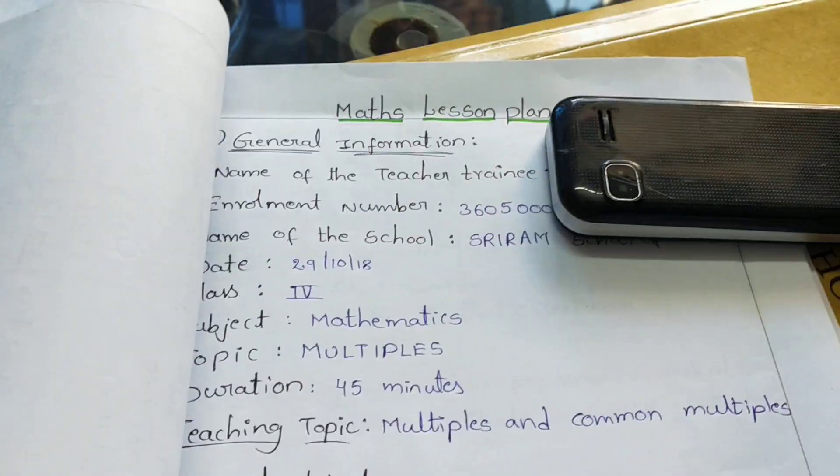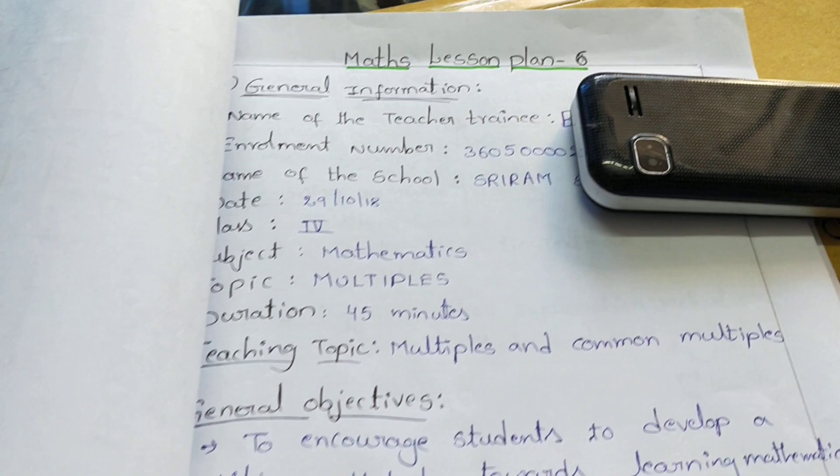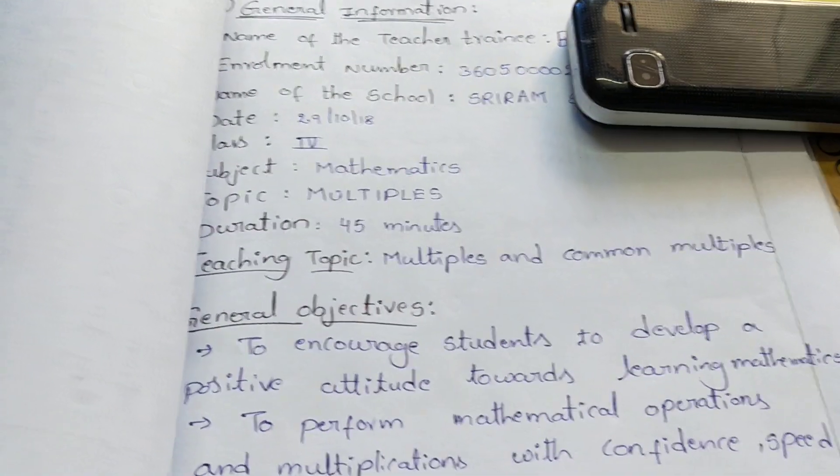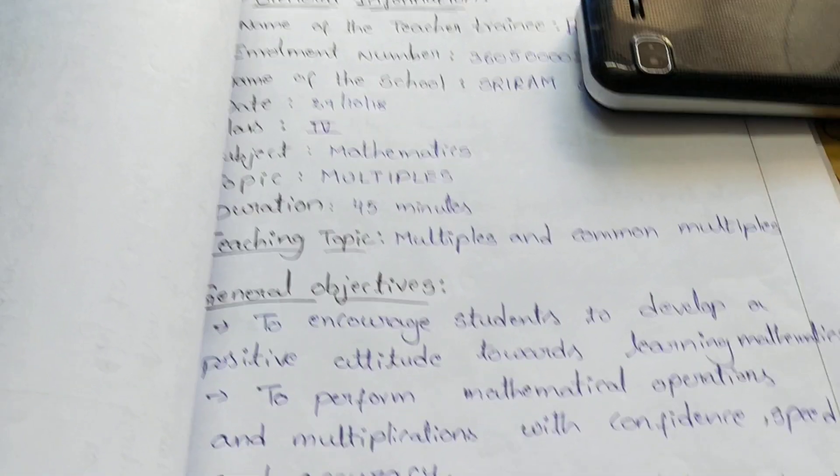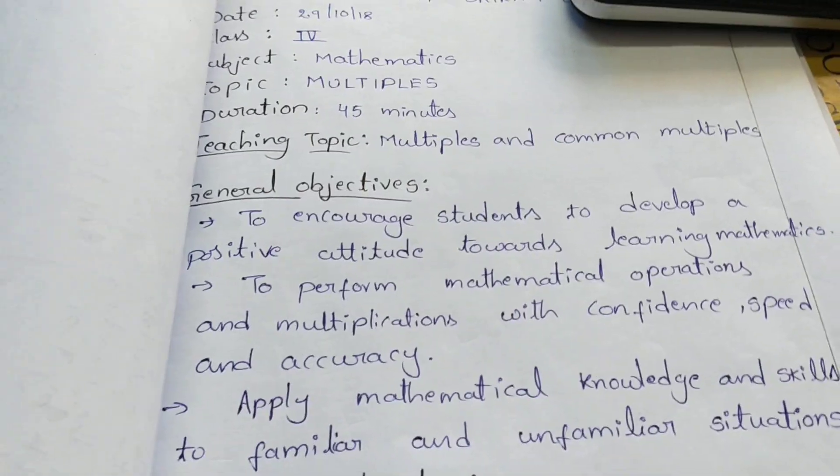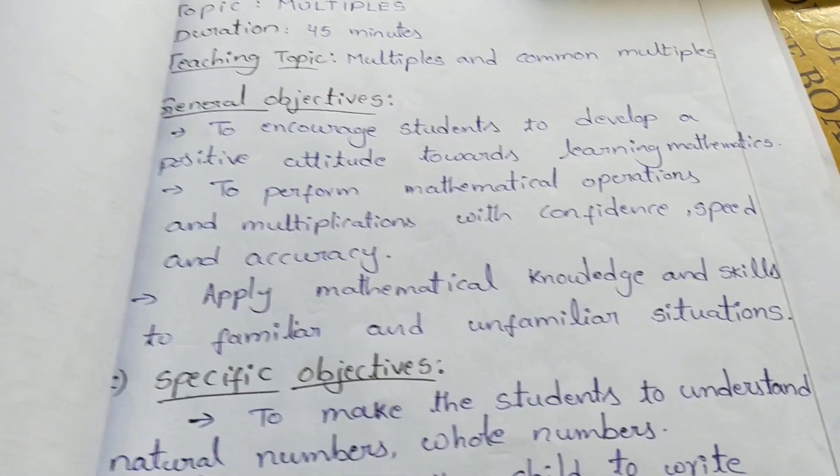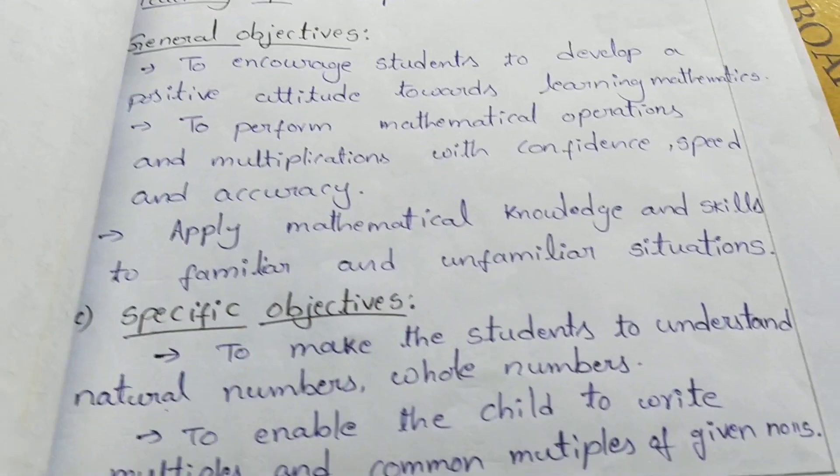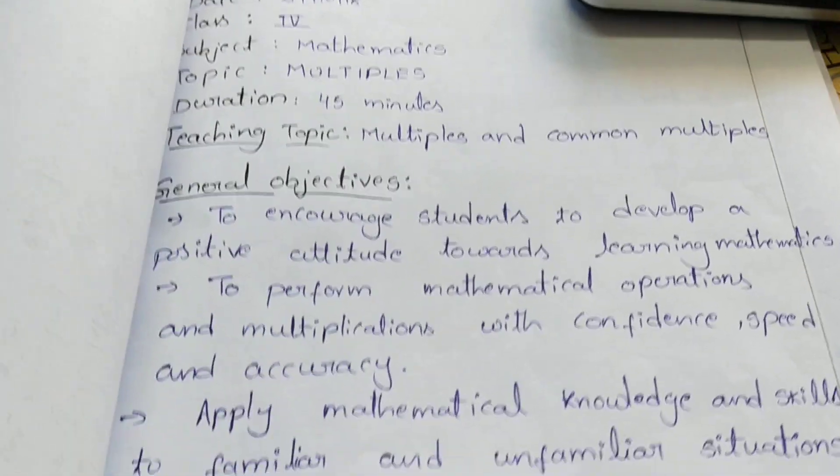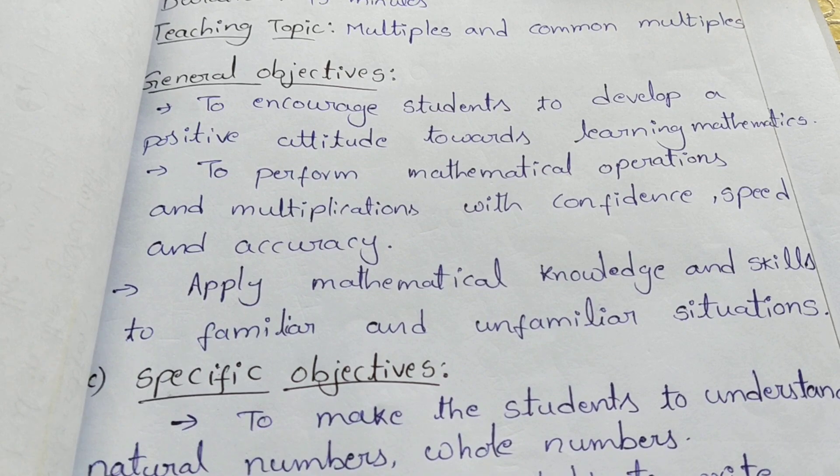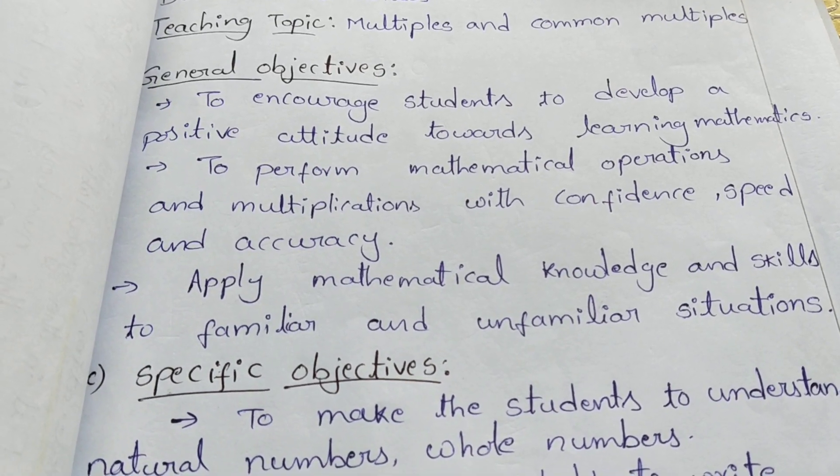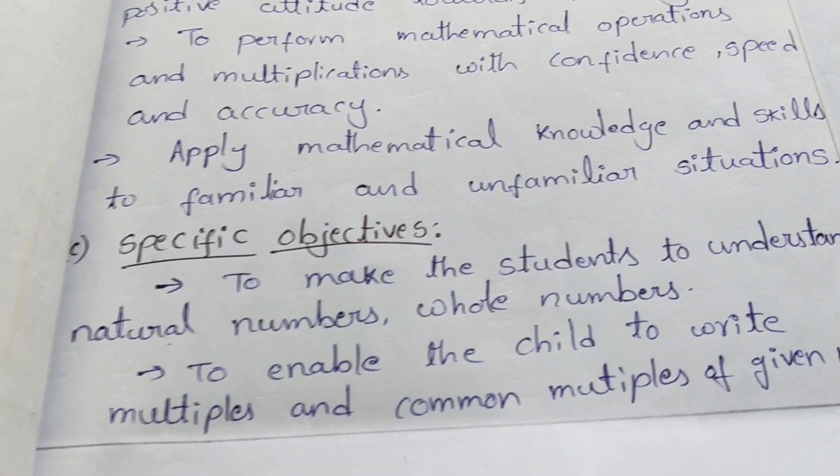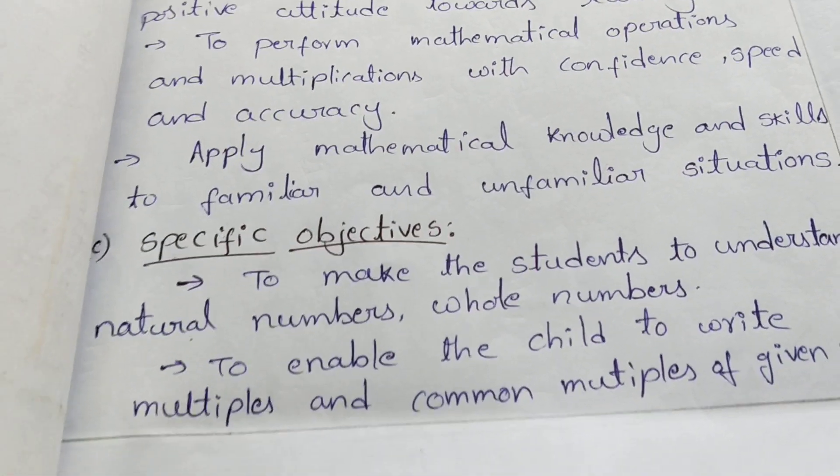Math lesson plan six. Topic is multiples. Teaching topic is multiples and common multiples. General objectives: this is the class fourth lesson plan. Specific objectives: to make the students understand natural numbers, whole numbers, to enable the child to write multiples and common multiples.